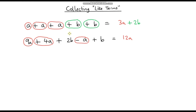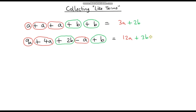Now let's look at our B terms. We've got plus 2B, and we are adding on another B. So if we're starting off at two B's and adding on another B, we now have three B's. So the answer is 12A plus 3B.